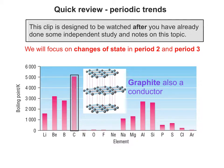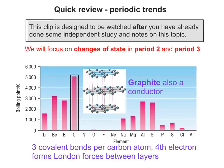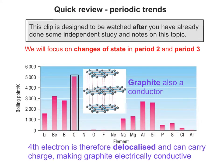Another giant covalent structure that carbon forms is graphite, which is also a conductor. With graphite there are three covalent bonds per carbon atom, but the fourth electron forms London forces between layers. This makes the fourth electron delocalised, and therefore it can carry charge, making graphite electrically conductive.